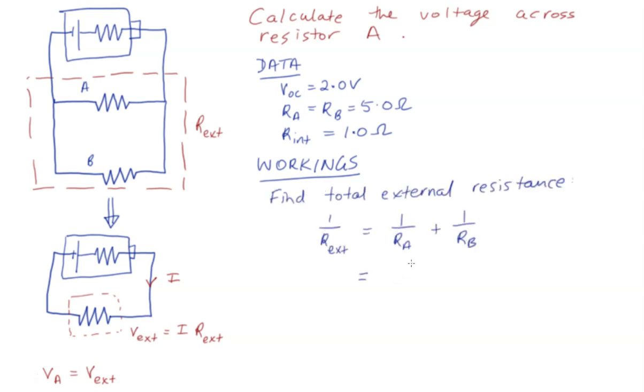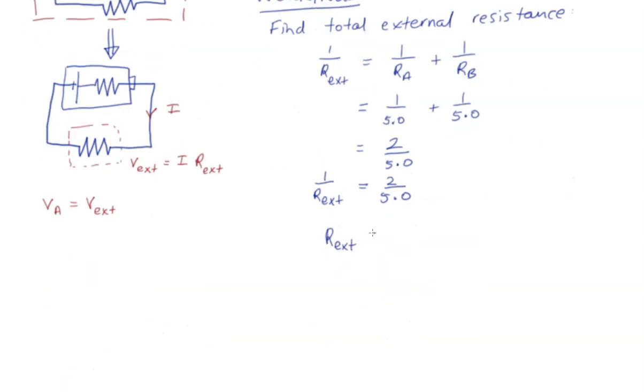So we're substituting our values. So don't forget we've still got to invert this. Okay, so the external resistance is 2.5 ohms.